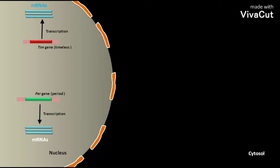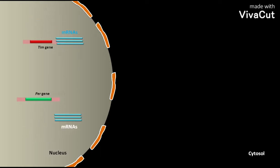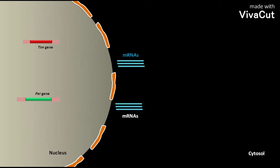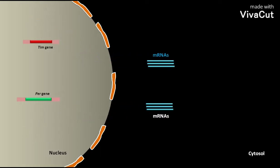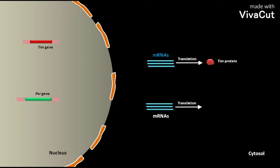The mRNAs transcribed from the TIM gene and PAR gene are then transported from the nucleus to the cytosol. In the cytosol, mRNAs transcribed from the TIM gene undergo translation to produce TIM protein, and the mRNAs transcribed from the PAR gene undergo translation to produce PAR protein.